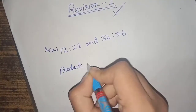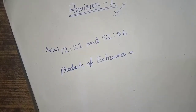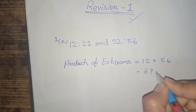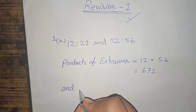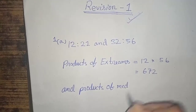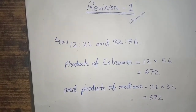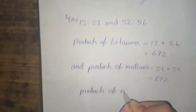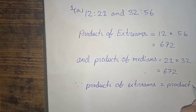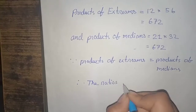This is the product of extremes. 12 into 56 gives 672. Product of medians: 21 into 32, answer is also 672. Since product of extremes is equal to product of medians, therefore the ratios are in proportion.